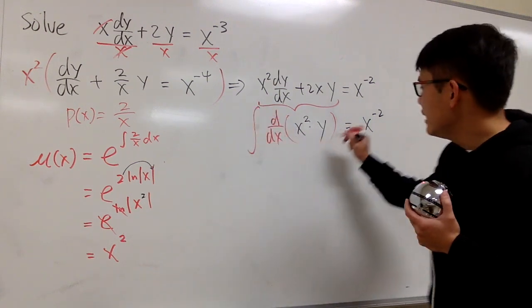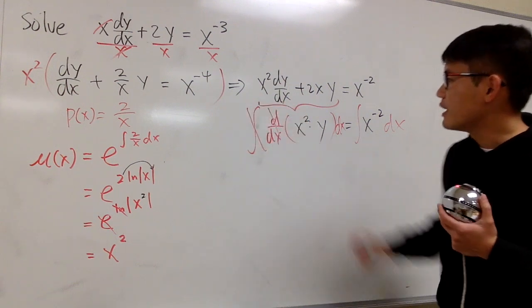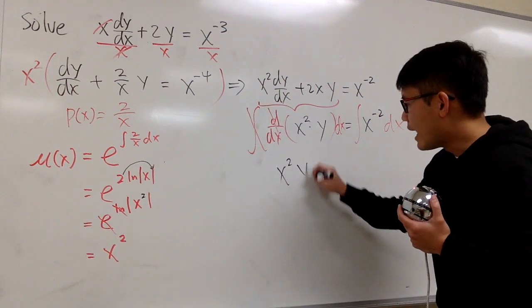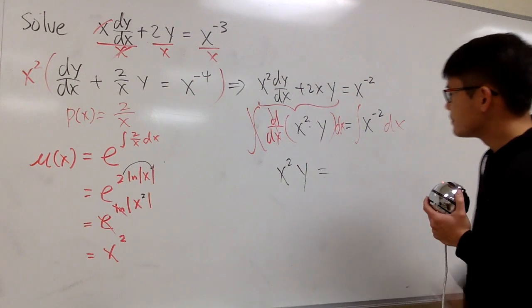And on the right-hand side, we have x to the negative 2. And then we can just go ahead and integrate both sides. So that this and that will cancel. And we just have this. x squared y. Don't worry about the plus c. This is equal to.